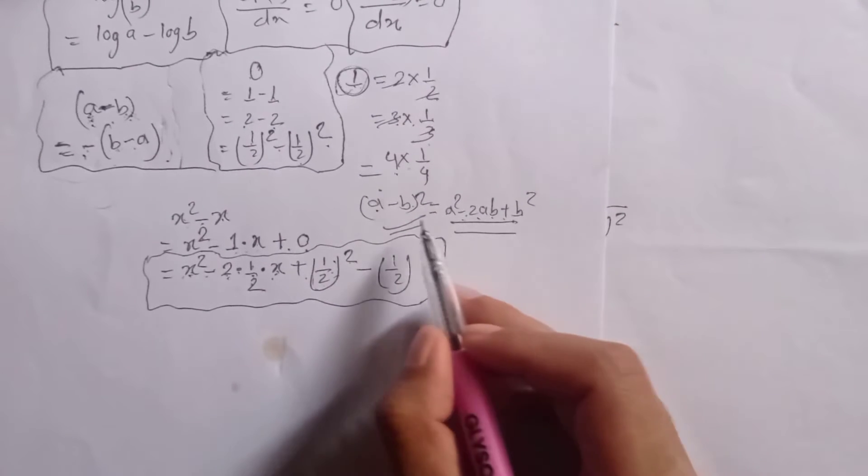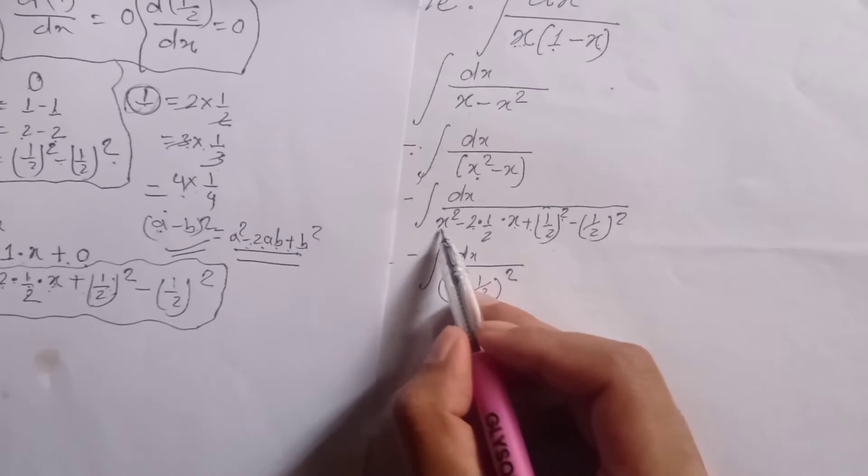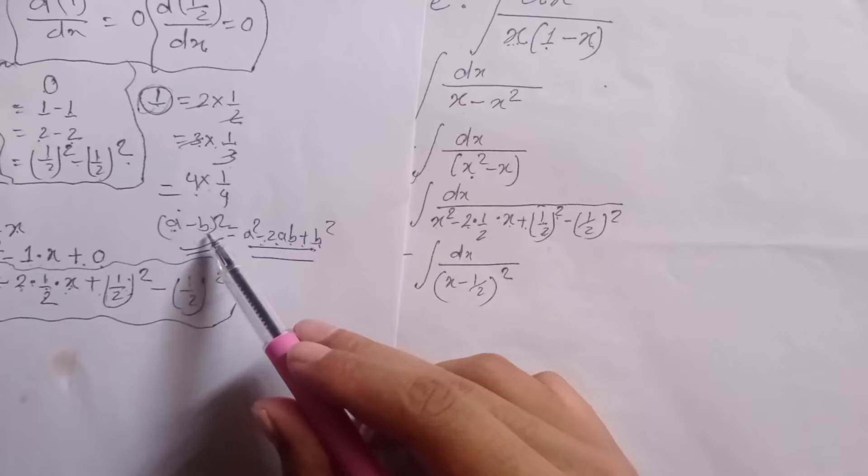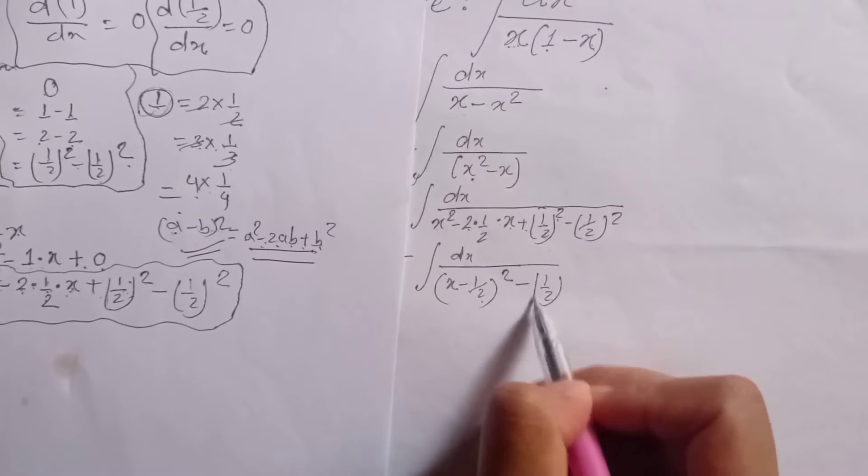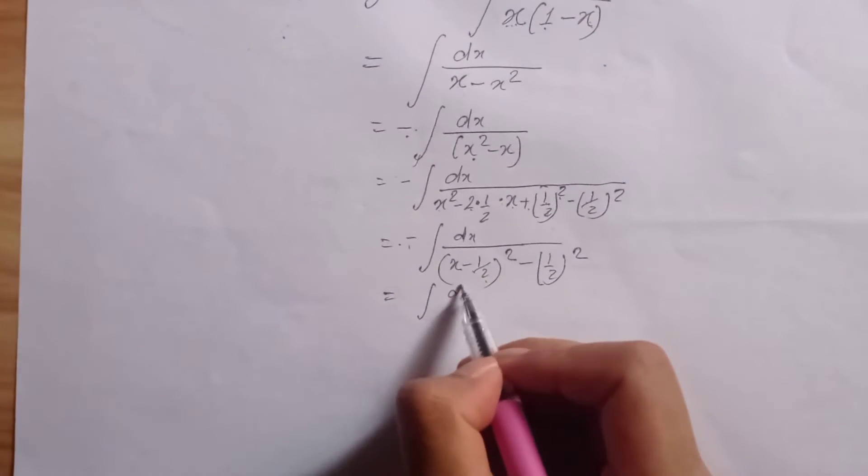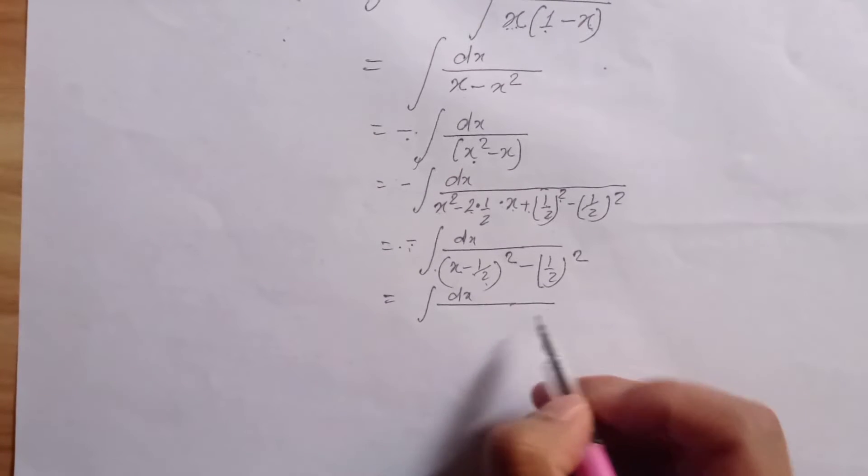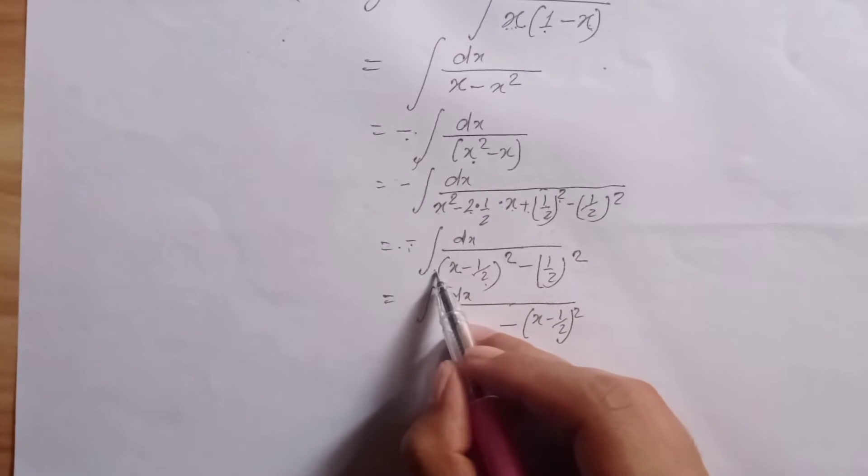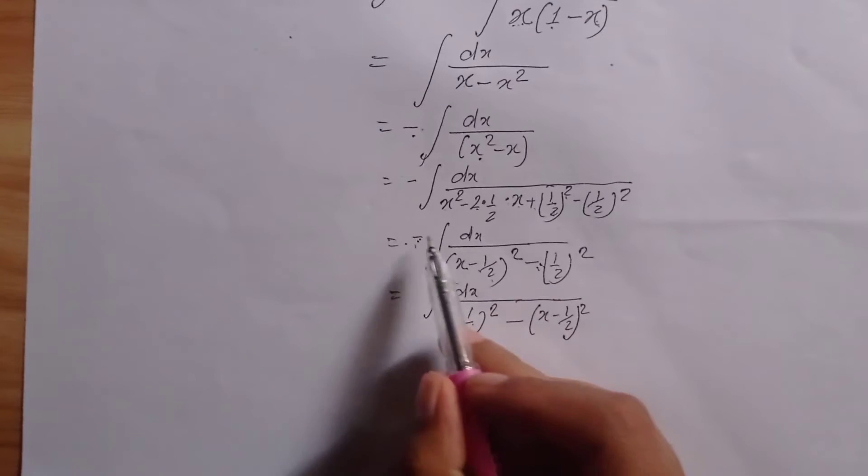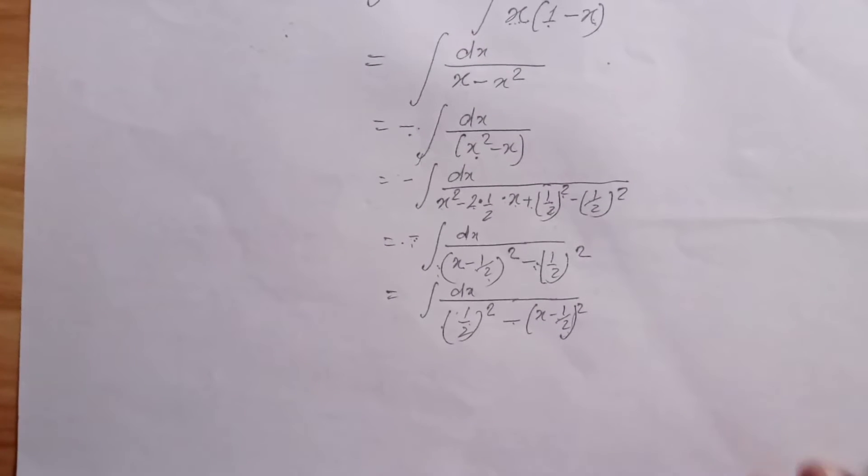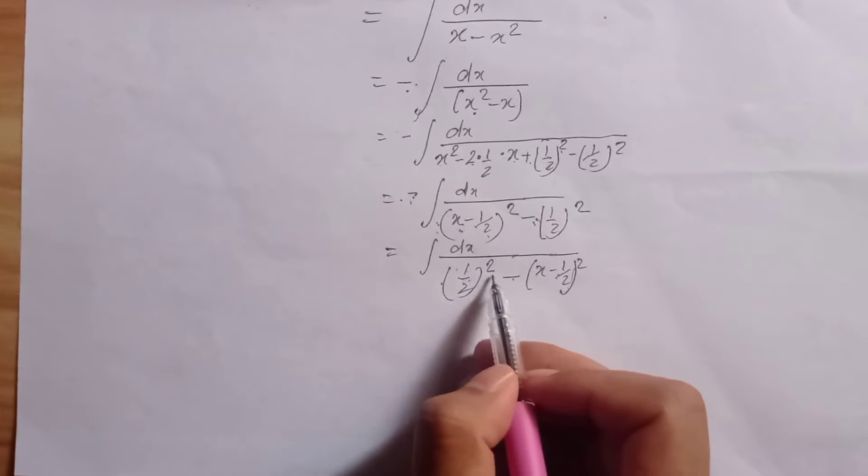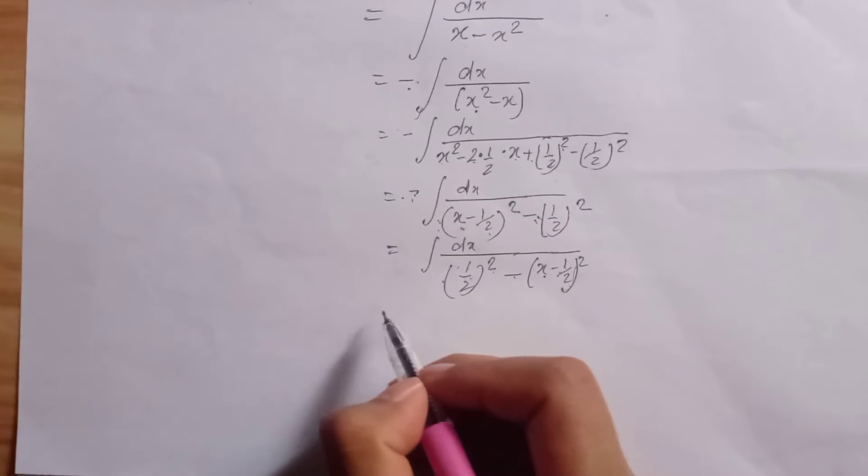We have x minus 1 by 2 whole squared. This is x minus 1 by 2 whole squared. So we get the form x minus b all squared. So it is minus dx by x minus 1 by 2 whole squared minus 1 by 2 whole squared. Minus times minus is plus, so we get plus 1 by 2 whole squared minus x minus 1 by 2 whole squared.